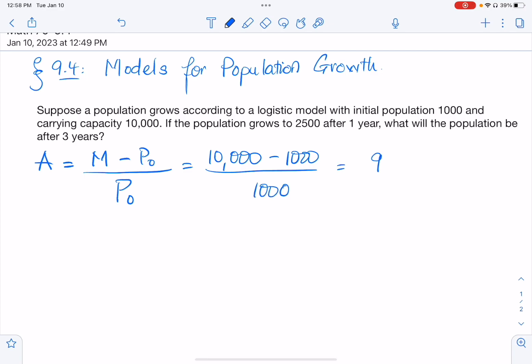So it's going to be 9. P of t, the population, is going to be 10,000 over 1 plus 9e to the negative Kt.